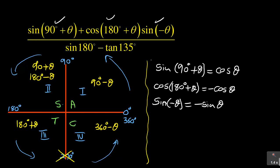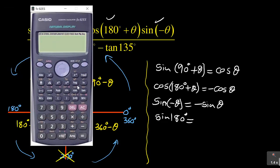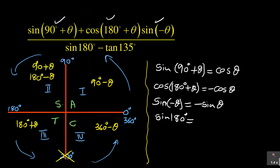And then the next one is sin(180°). On this one, you don't need to stress yourself — just use the calculator and punch sin 180, and see the answer you're getting. They won't penalise you. You're getting a zero, so that would be zero.